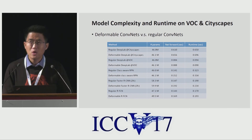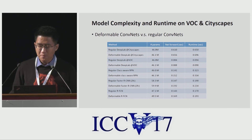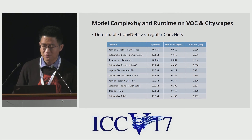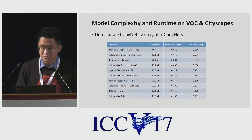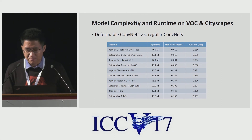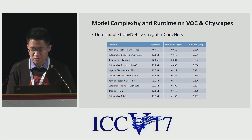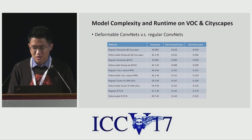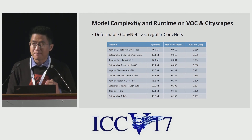Someone may challenge whether deformable convolutions improve performance by secretly adding a lot of computation in the offset branch. The answer is definitely no. The additional offset branch only adds very small additional parameters and computational overhead. By enabling the network to model complex spatial transformation, deformable convolutions can significantly boost accuracy with only marginal computational and parameter overhead.